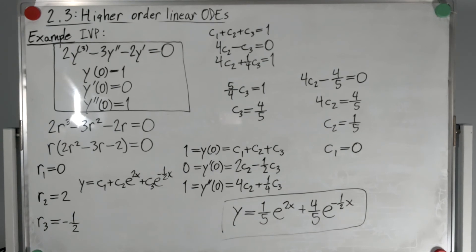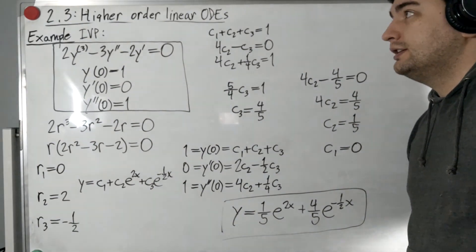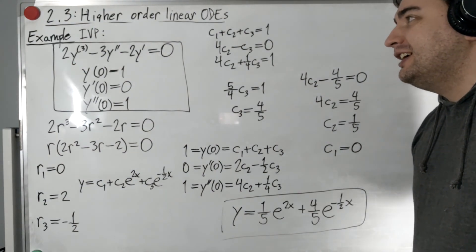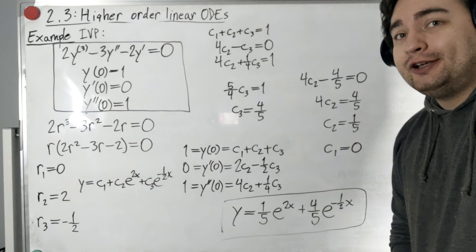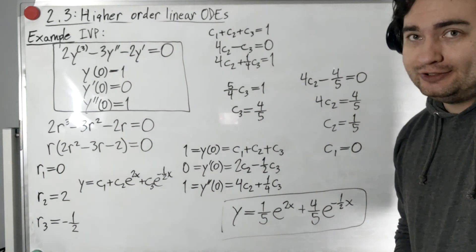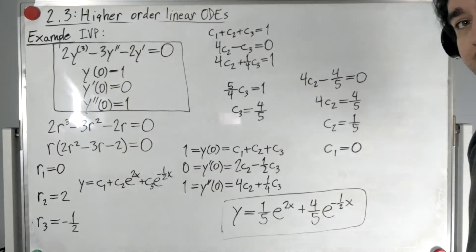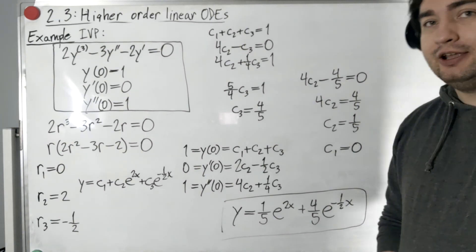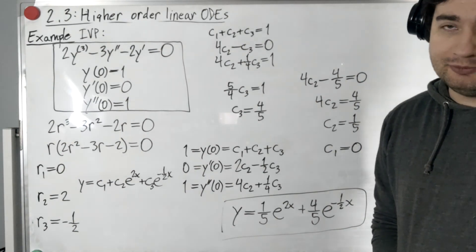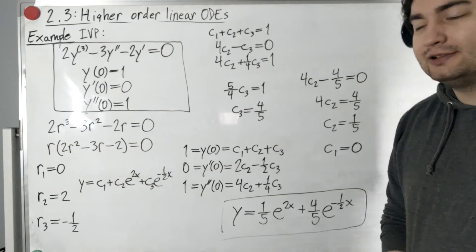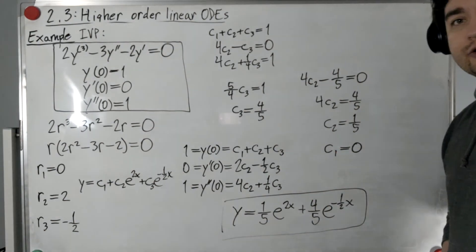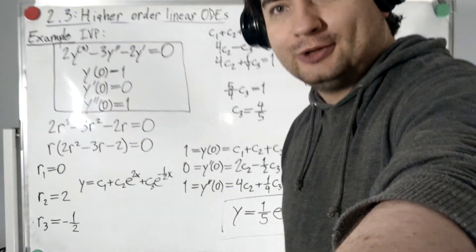To summarize: solving higher-order linear homogeneous ODEs with constant coefficients is not really that much different from second-order ones. You find the characteristic equation, find the solutions it generates, and put those together as the general solution. If you have an initial value problem, you have a system of equations to solve — which isn't too hard if you take a moment to think about it. That's all for this time.